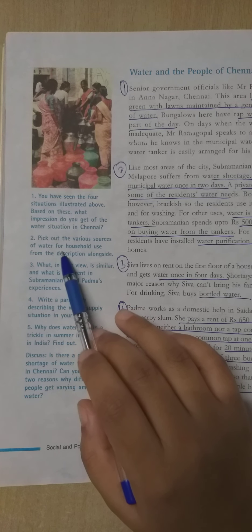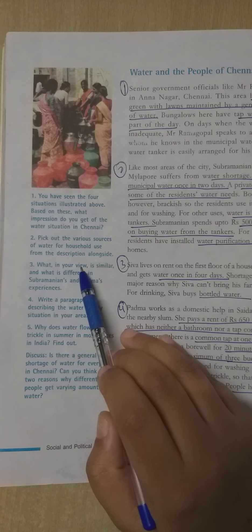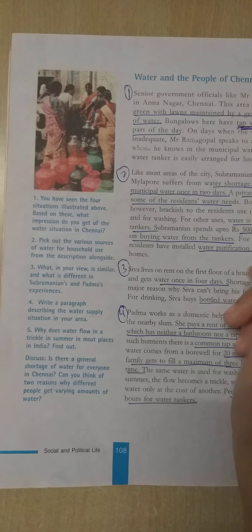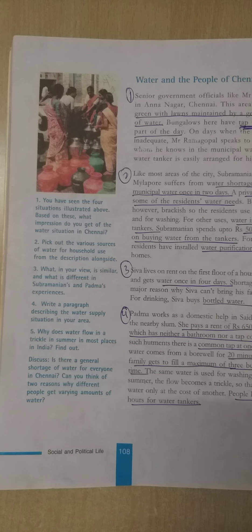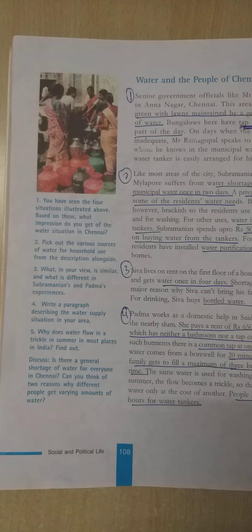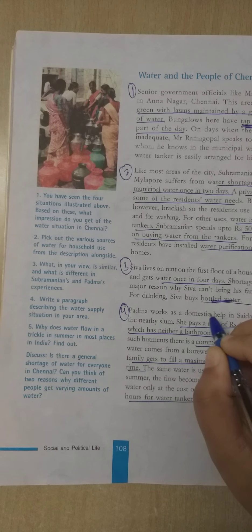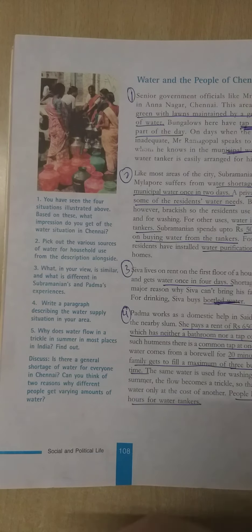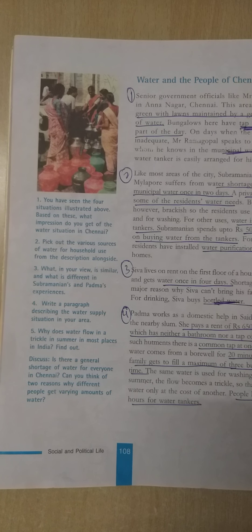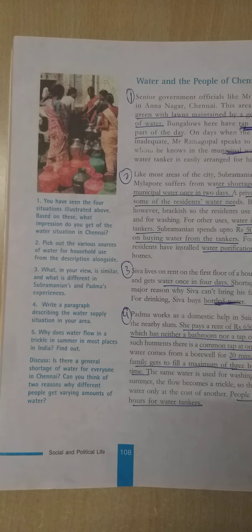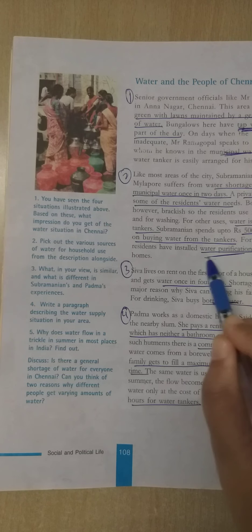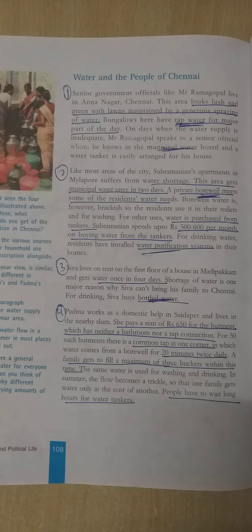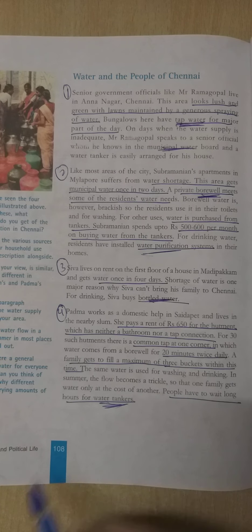The various sources of water for households in Chennai include tap water, water tankers, bottled water, municipal water supply, borewell systems, and water purification systems — showing the multiple ways residents cope with inadequate public water supply.